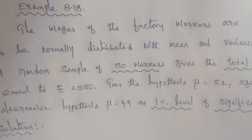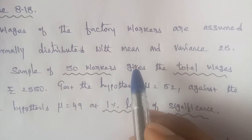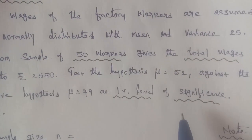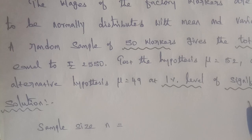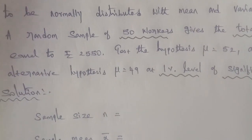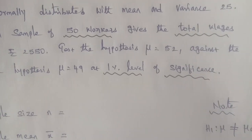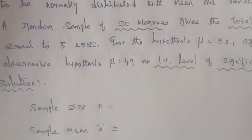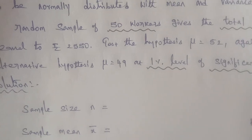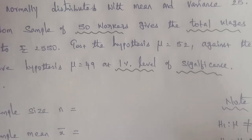Example 8.18: The wages of factory workers are assumed to be normally distributed with mean and variance 25. A random sample of 50 workers gives total wages equal to rupees 2550. Test the hypothesis H₀: μ = 52 against the alternative hypothesis H₁: μ = 49 at 1% level of significance.